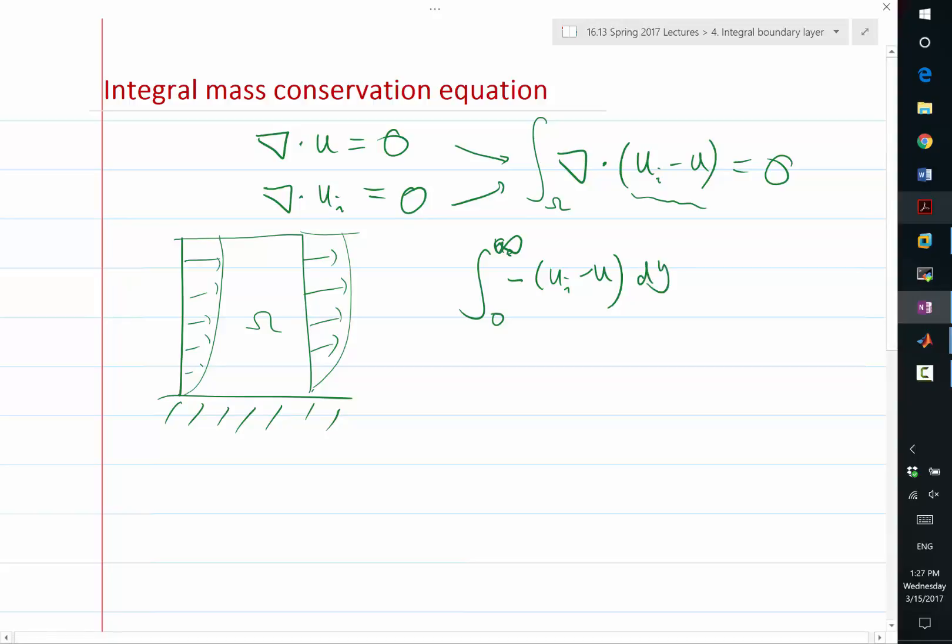So this is times dy, so this is the flux going outside towards the left, plus the flux going outside towards the right. So this is at x1, this is ui minus u dy at x2.